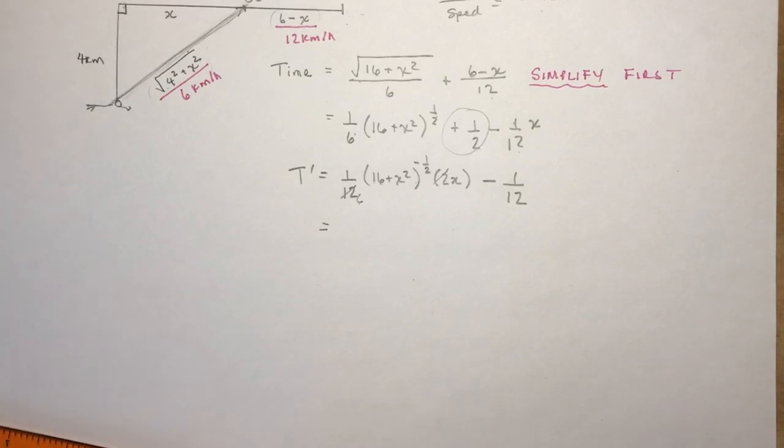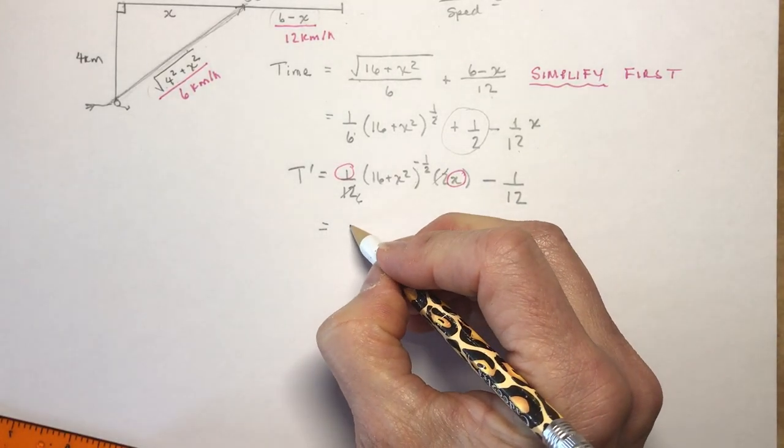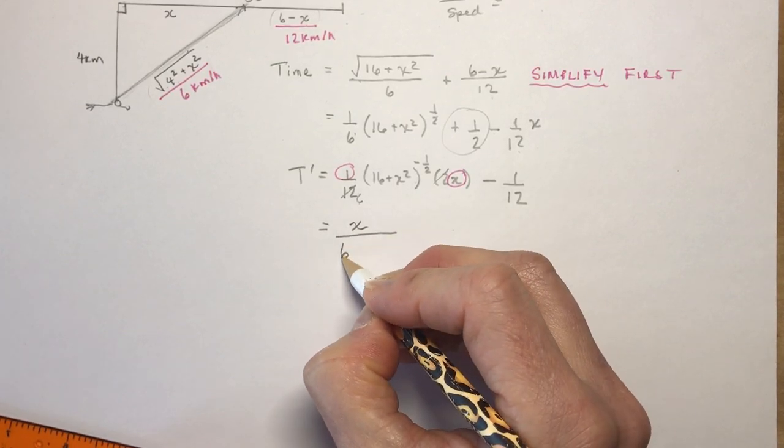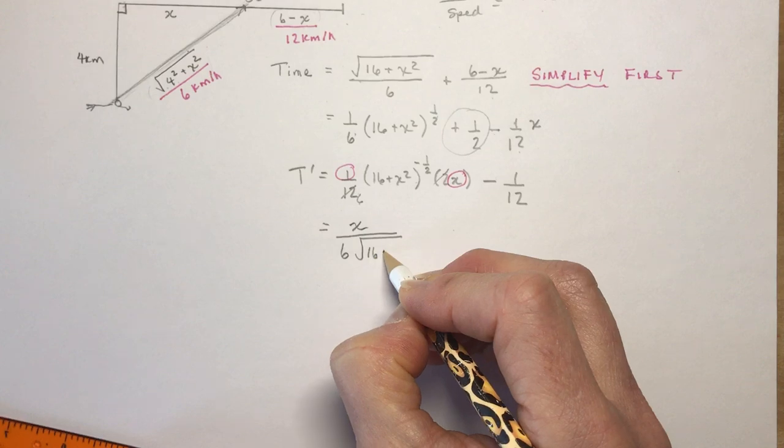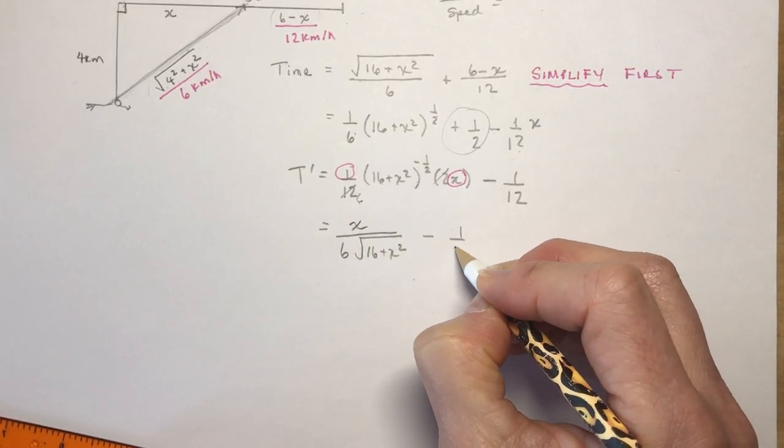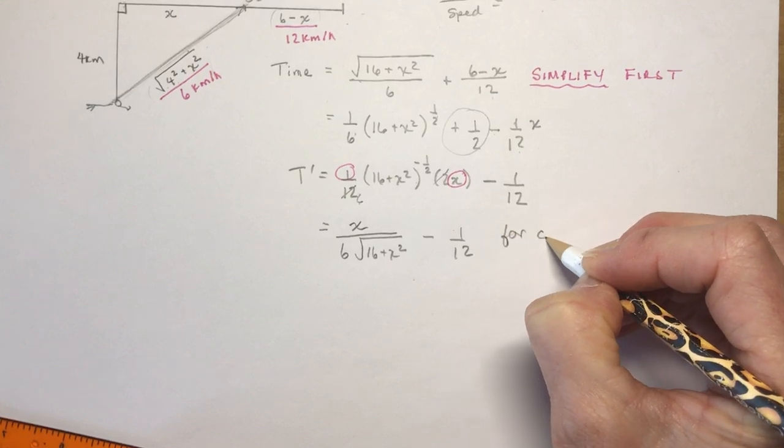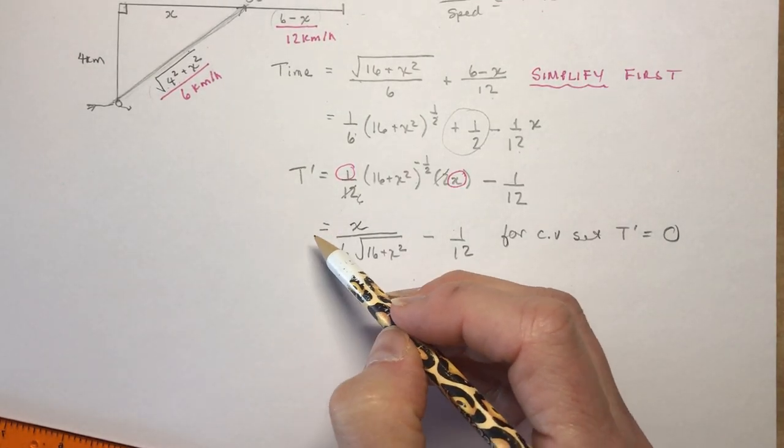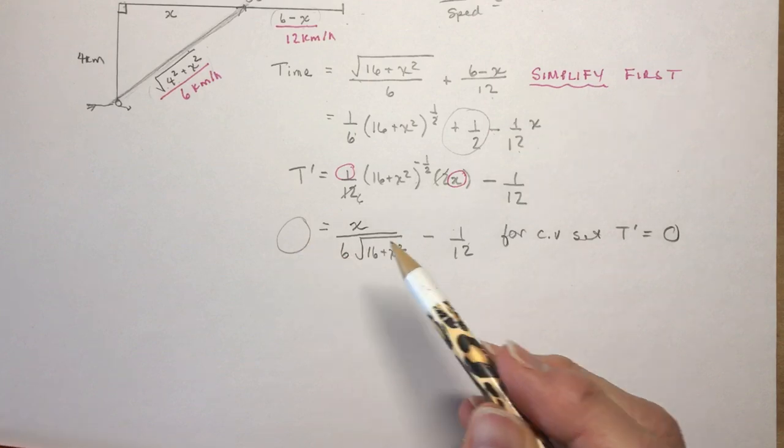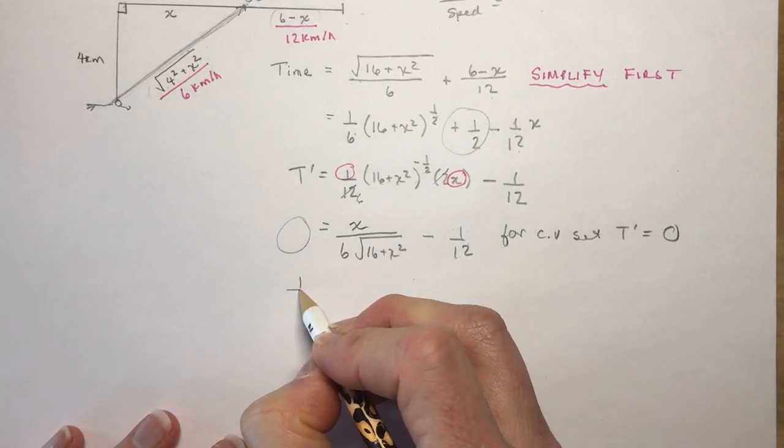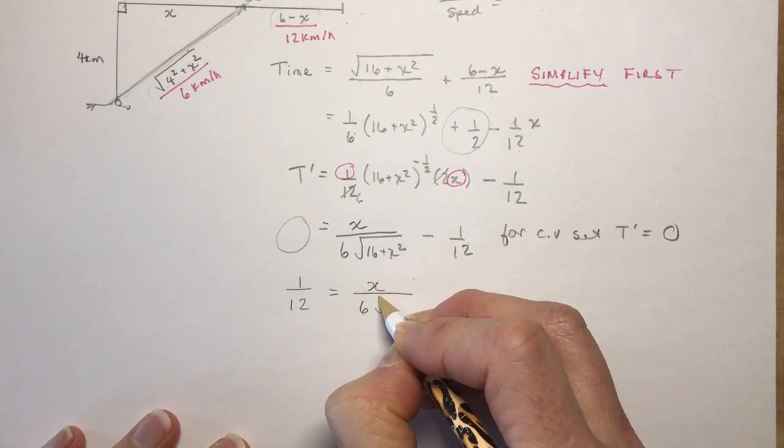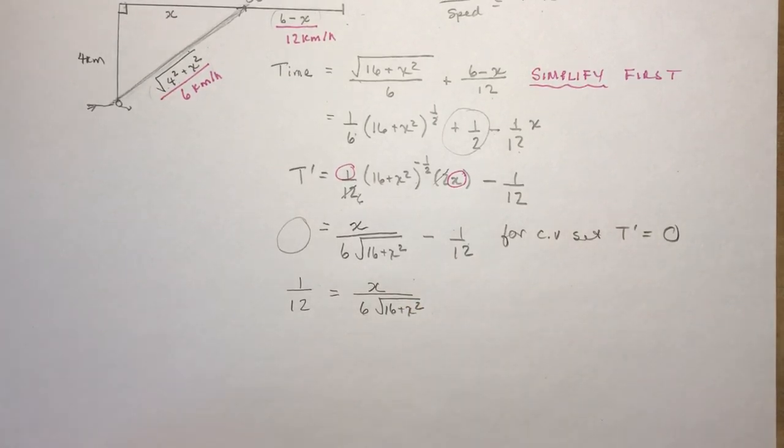This 2 can divide into the 12 six times. Now I have to make sure that I'm keeping everything in the numerator, so I have minus 1 times x—I did this once and forgot the x and it was a wreck. So I have x in the top here and I have 6 times the square root of 16 plus x squared minus 1/12. Now I'm going to say for critical values set T' equal to 0.